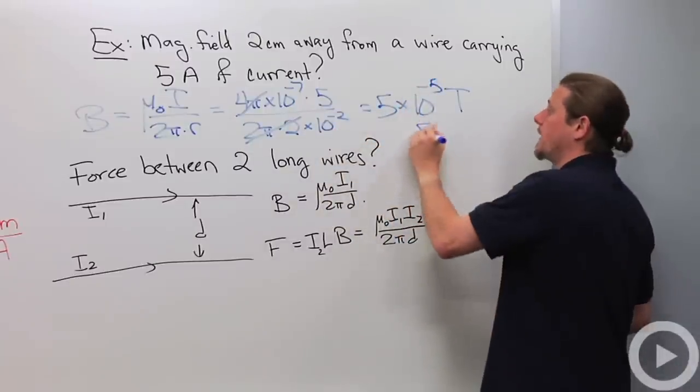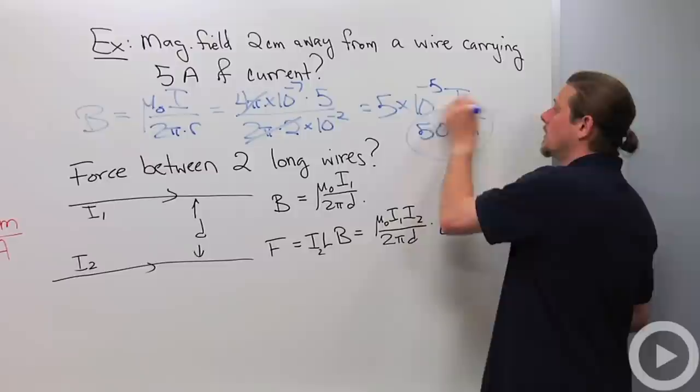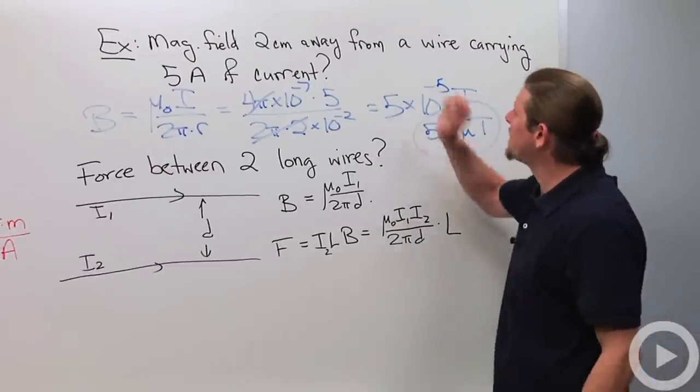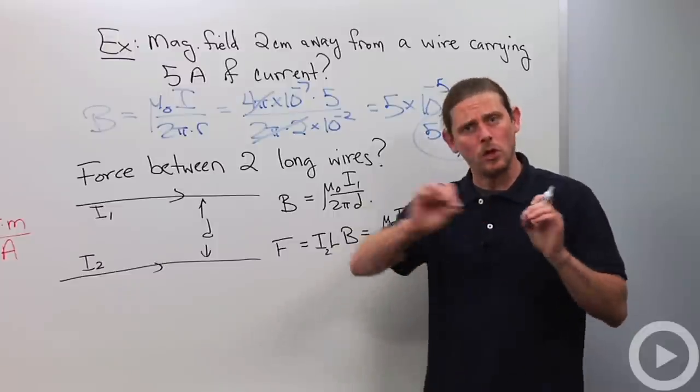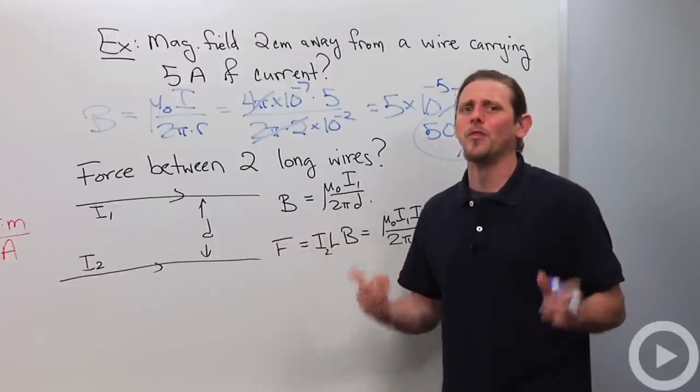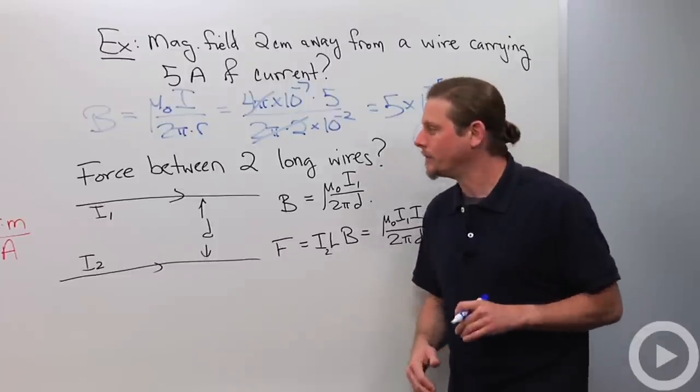Alright, or 50 microtesla. Alright, so that's the magnetic field. It's not a really big magnetic field, and 5 amps is a fairly large current. So, when we do this just with a long straight wire, generally we don't end up with a huge magnetic field. We'll have other ways to do that later.